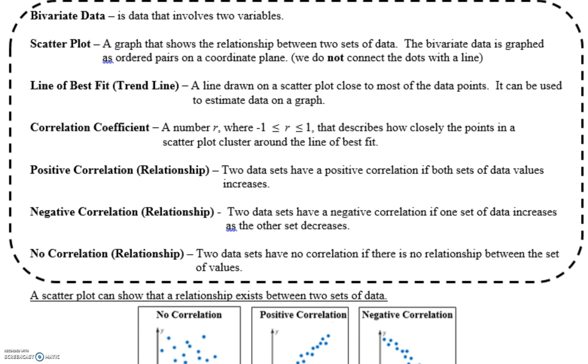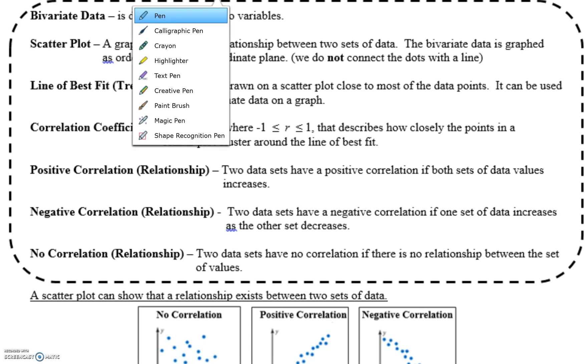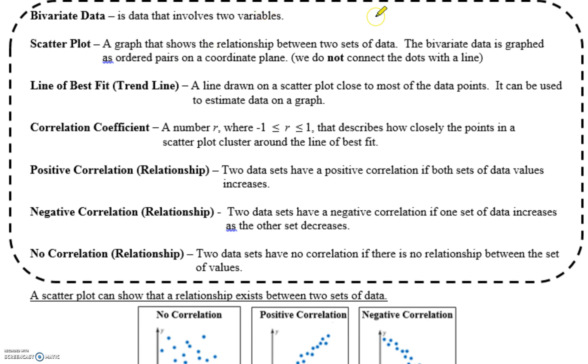Correlation coefficient is a new idea now. So a correlation coefficient describes how closely the points in a scatter plot cluster around the line of best fit. So we describe our correlation coefficient with the letter R, and our correlation coefficient has to be between negative 1 and 1, where negative 1 is the strongest, absolute strongest negative relationship, while positive 1 is the absolute strongest positive relationship.